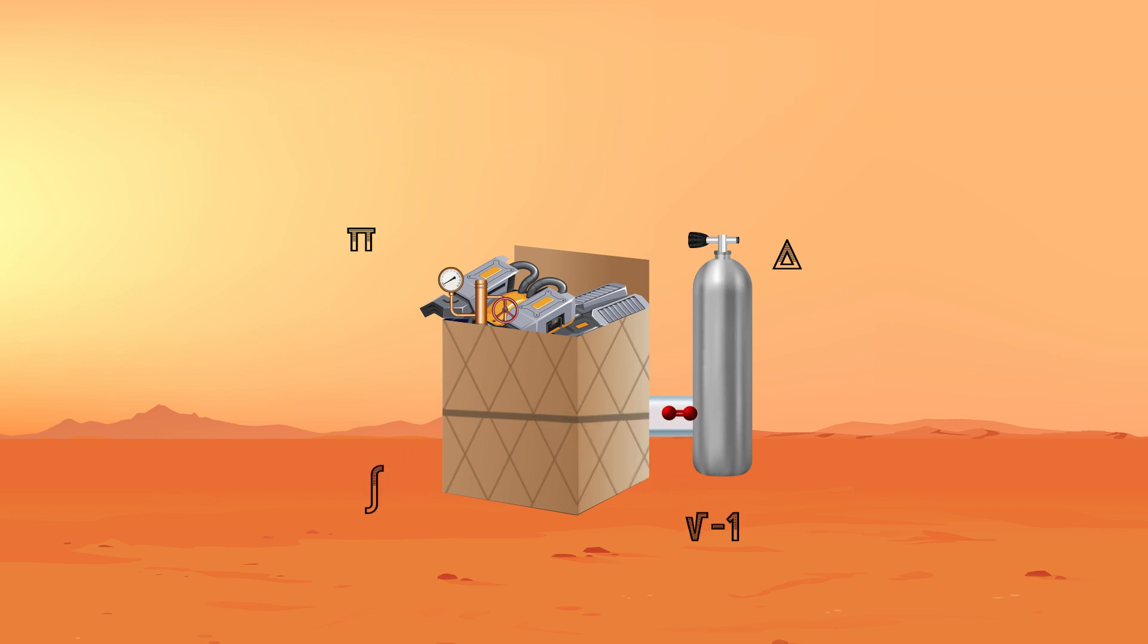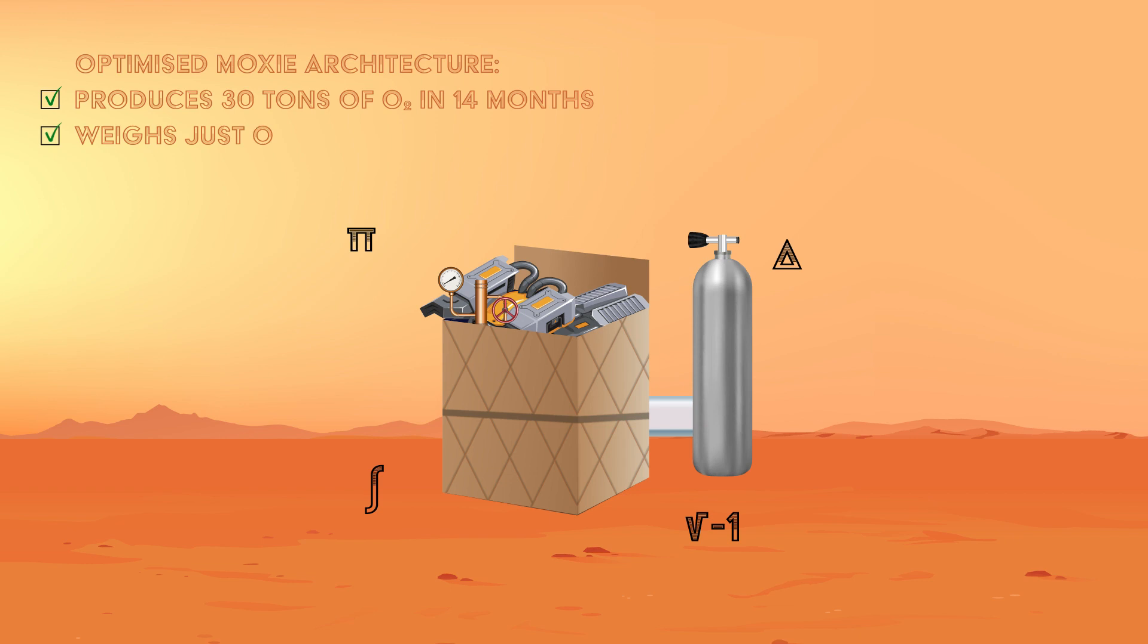Based on their analysis, they calculated that an optimized MOXIE architecture would produce 30 metric tonnes of oxygen over 14 months, while weighing just over 9 tonnes, and consuming fewer than 27 kilowatts of power.